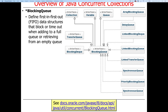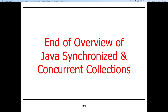Another thing you find in concurrent collections are blocking queues. We've talked about blocking queues before and discussed how to implement things like ArrayBlockingQueue or LinkedBlockingQueue, which are all part of the Java concurrent collections framework. There's a whole set of these: ArrayBlockingQueue, LinkedBlockingQueue, and something called SynchronousQueue, which you used in your program to pass into the ThreadPoolExecutor. And that is the overview of Java synchronized and concurrent collections.